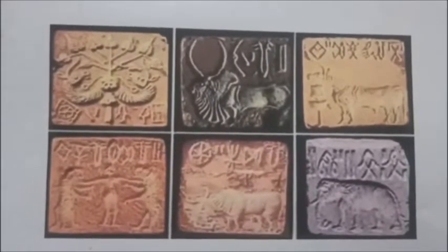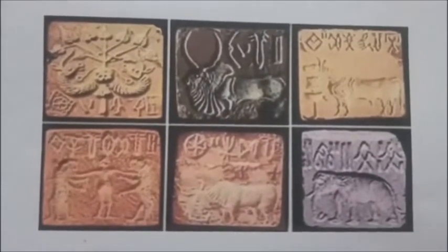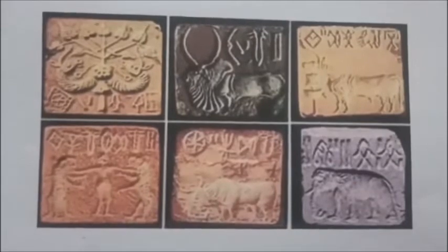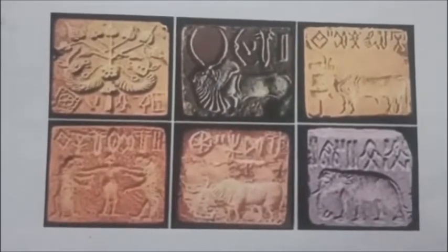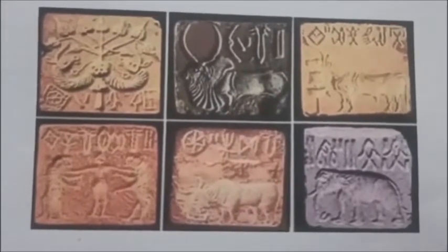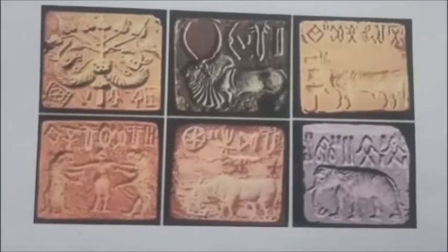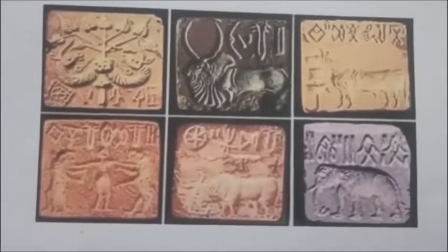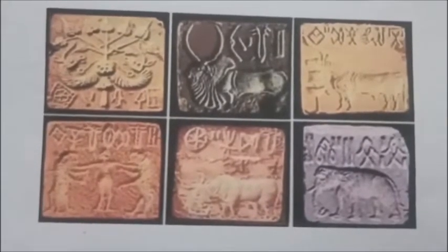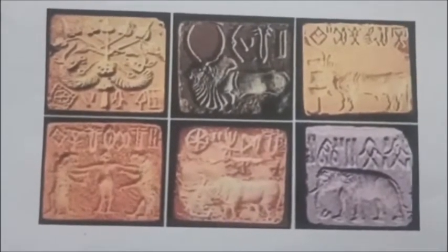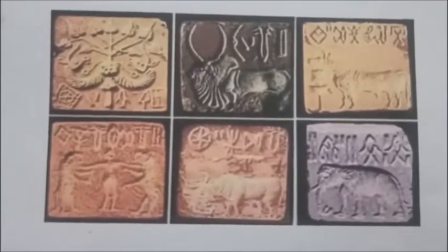The seals of the Harappan Civilization were mainly square-shaped and made from a stone called steatite. These seals bear pictures of animals. They include pictures of real animals like bulls, buffaloes, oxen, elephants, rhinos, tigers, and also of imaginary ones like the unicorn. Human figures are also seen. These seals were used as stamps.